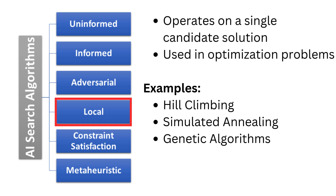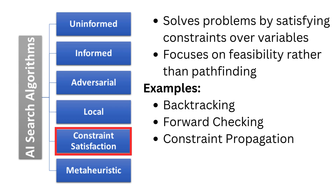Local search algorithms work with a single solution, improving it iteratively. They are ideal for optimization problems. Examples include hill climbing, simulated annealing, and genetic algorithms.